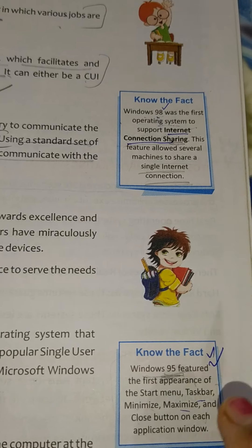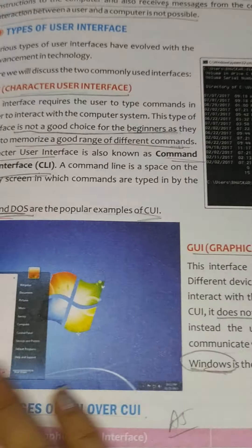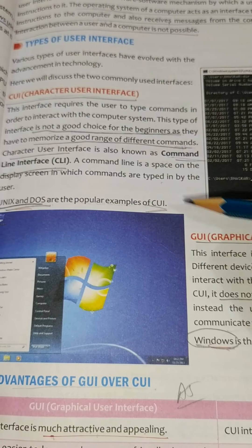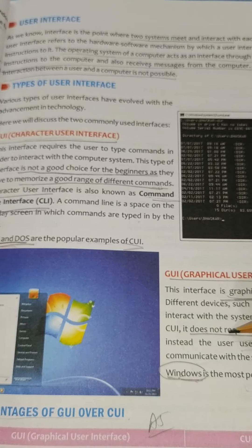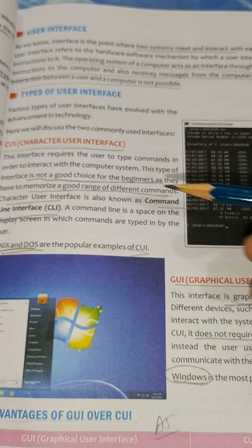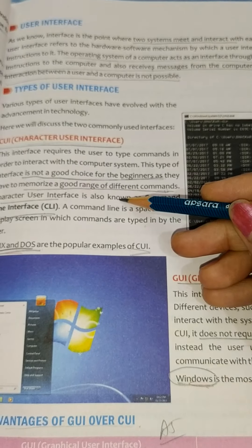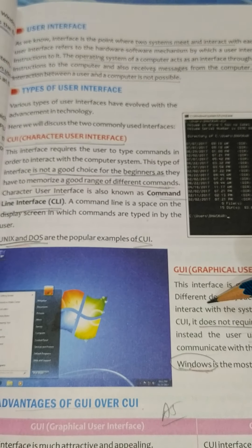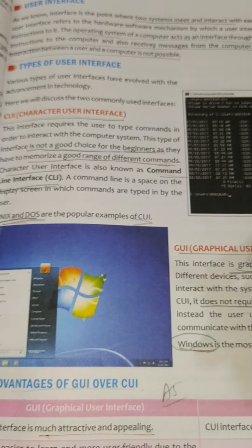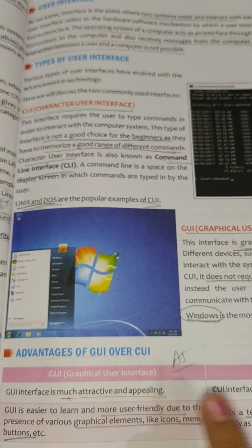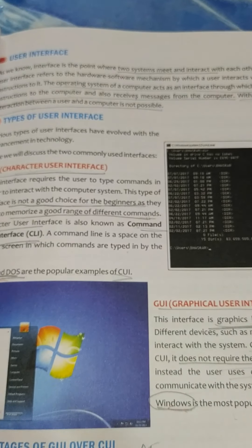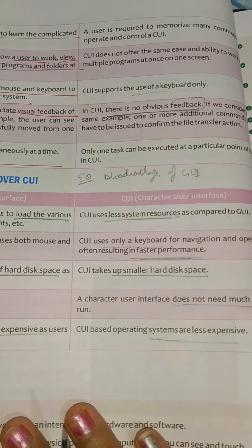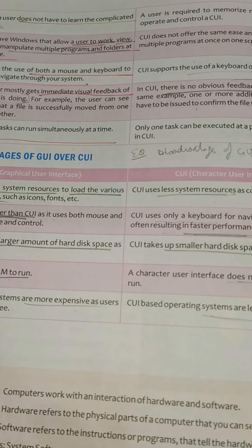So girls, go through these points. Learn these two types — their features, differences, advantages of GUI, and advantages of CUI. The disadvantages of one are the advantages of the other. Learn these two tables as differences, advantages, and disadvantages can all be asked. Go through all these pages and complete this chapter. We will give you question answers afterwards. Thank you.